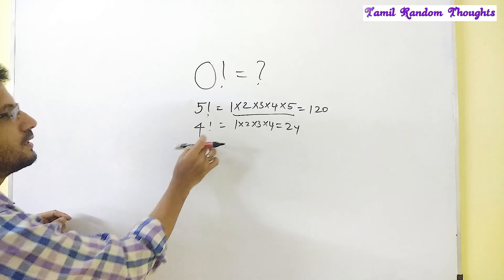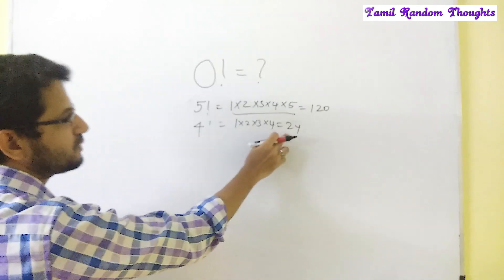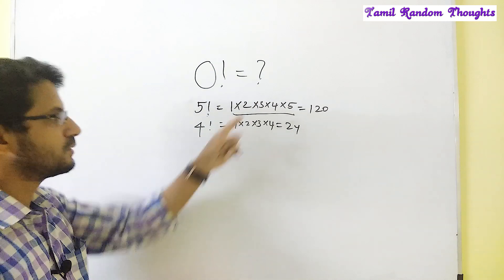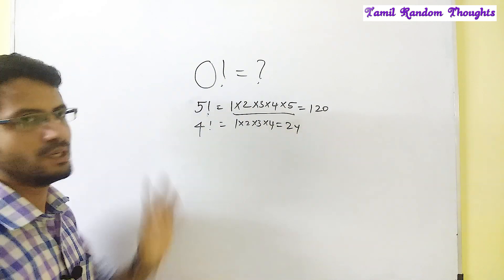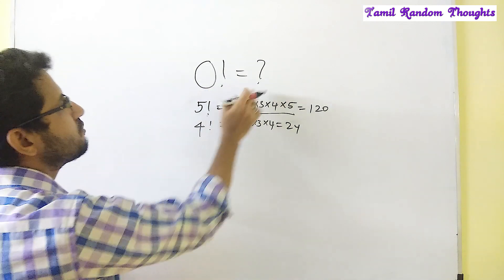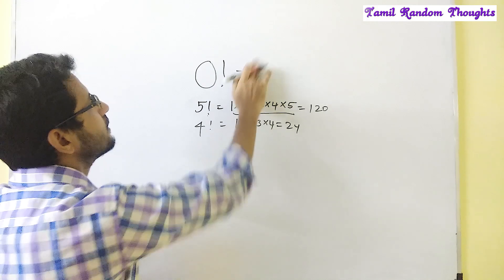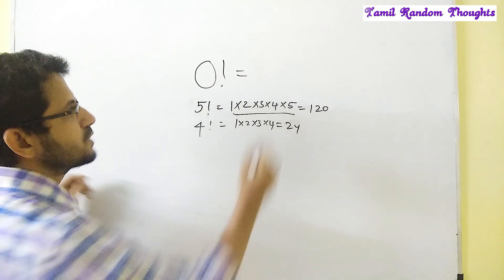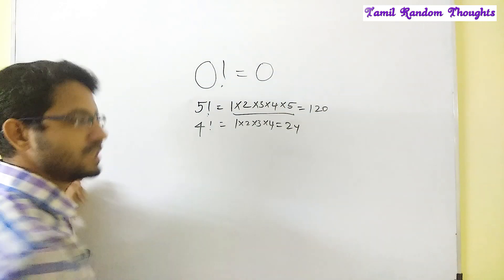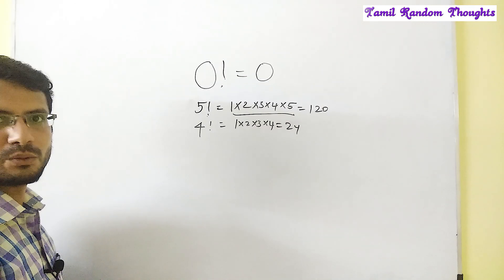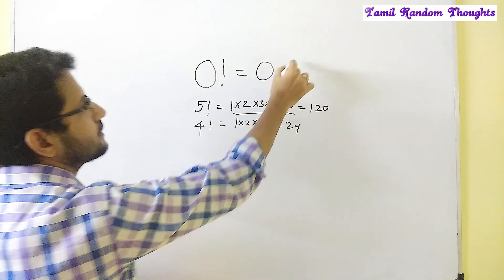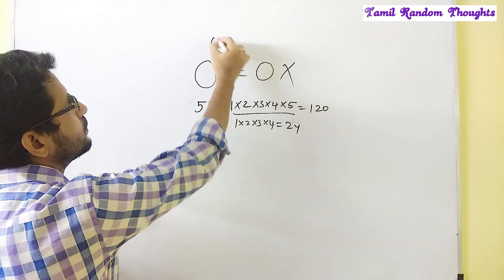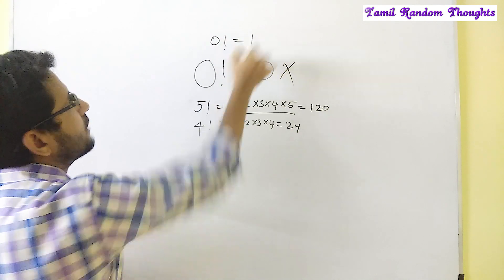You know, 4 factorial is 24. 5 factorial is 120. You know, multiply it. What is the value of 0 factorial? The value of 0 factorial is 1.